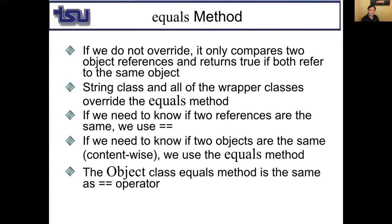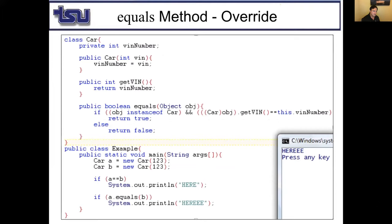The Object class equals method is the same as the == operator. Here I have class Car with a private VIN number, a constructor, a getVIN method, and I'm overriding equals from Object class. It checks if the input obj is an instance of Car using the instanceof keyword, then casts obj to Car and compares VIN numbers.